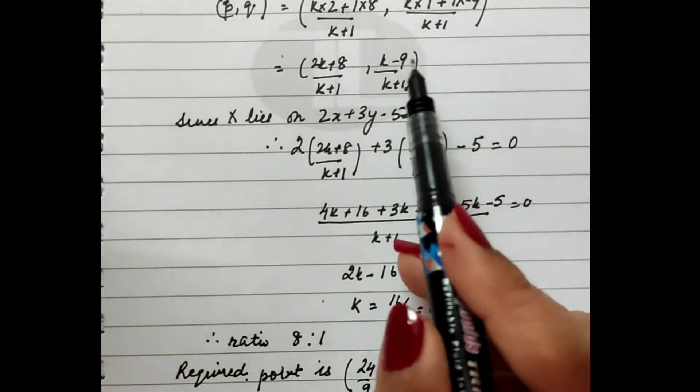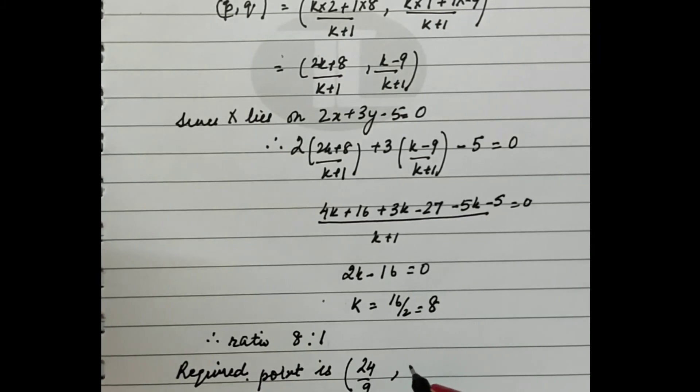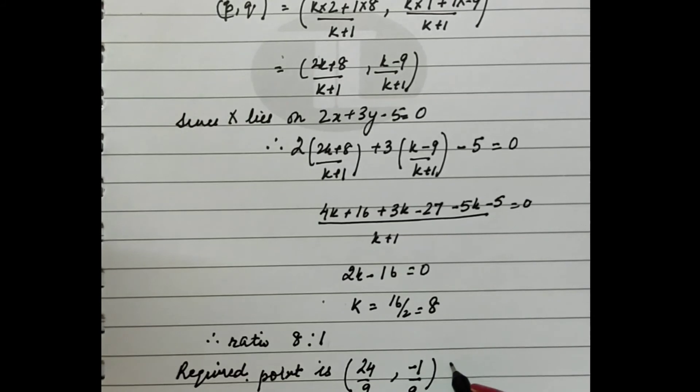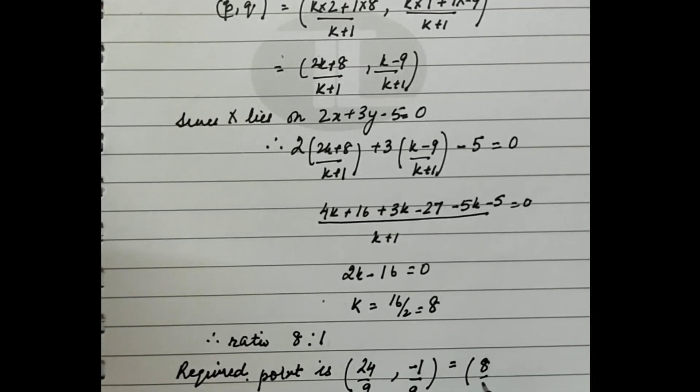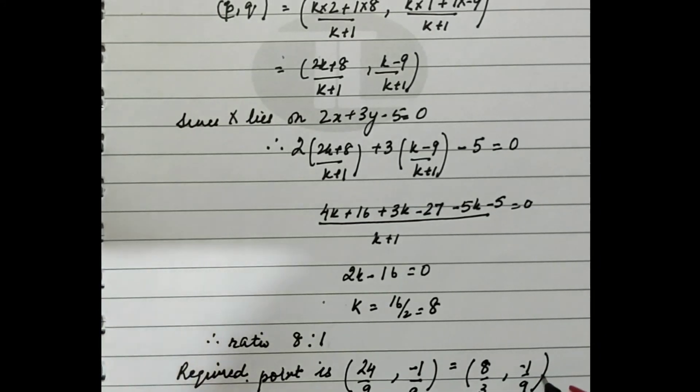For the y-coordinate: k - 9 = 8 - 9 = -1, so -1/9. Simplifying by dividing by 3, we get the point as (8/3, -1/9). These are the coordinates of the required point, and we're done.